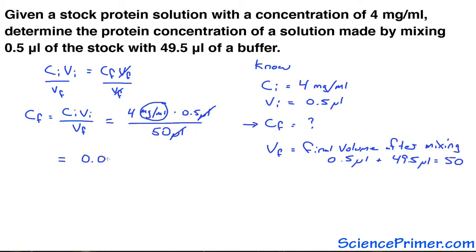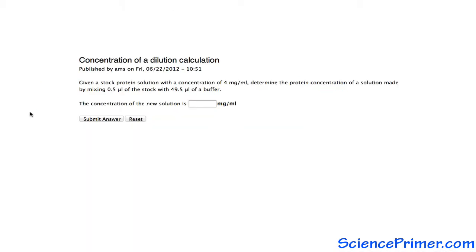So the final concentration of the solution, after half a microliter of a 4 mg per mil solution is mixed with 49.5 microliters of buffer, is 0.04 mg per mil.